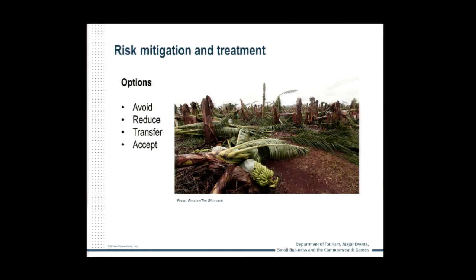Risks may be treated in a number of ways, including by avoiding the risk or deciding to discontinue the activities or processes giving rise to the risk. For example, a food retailer may decide to remove an item from their menu if they identify that the ingredients have a very short shelf life and they're concerned about food poisoning.